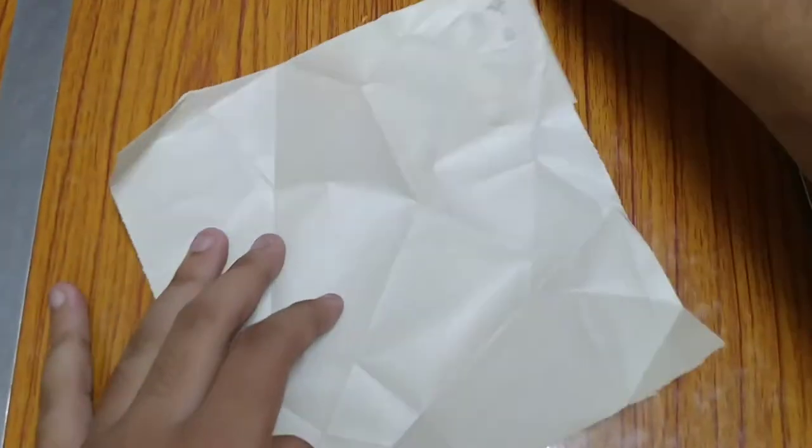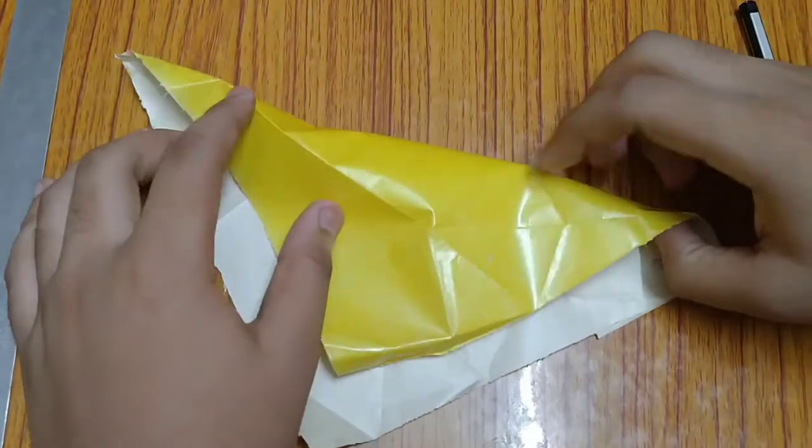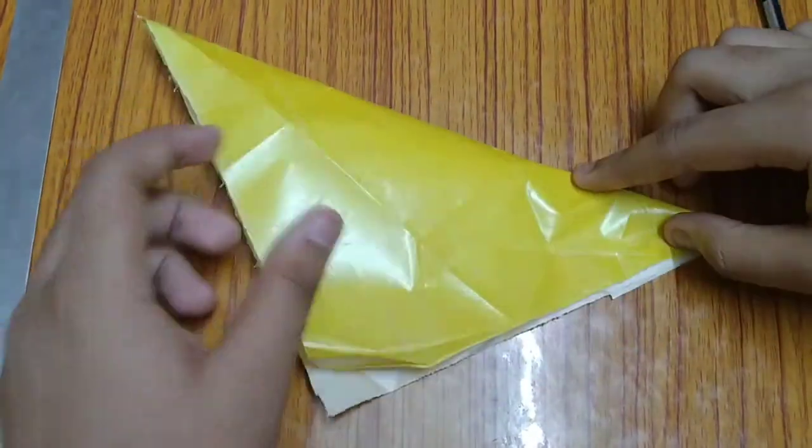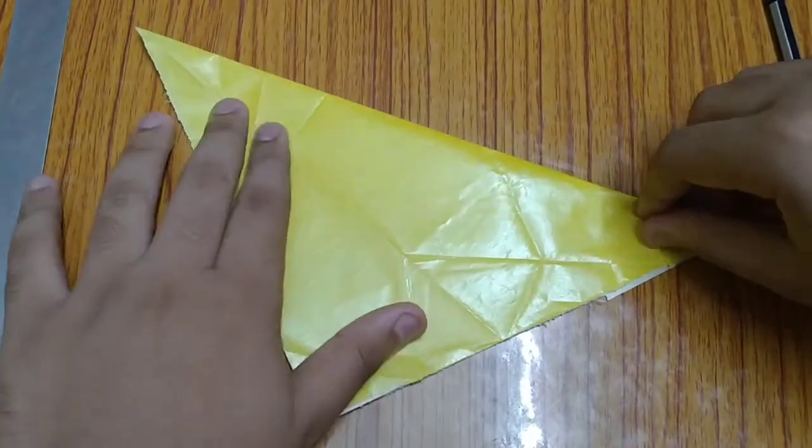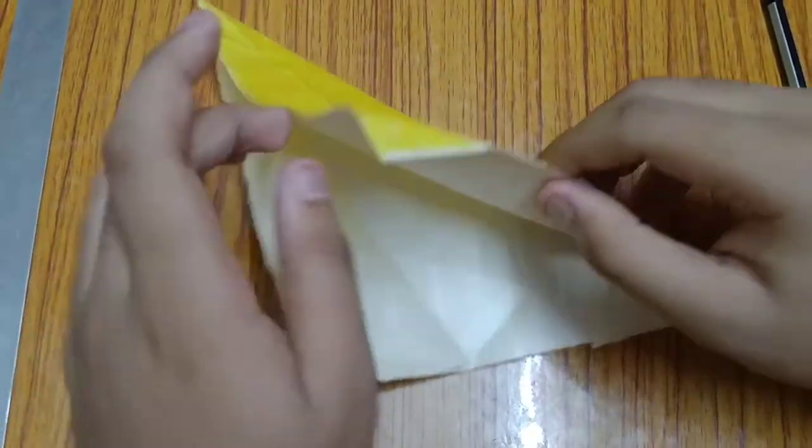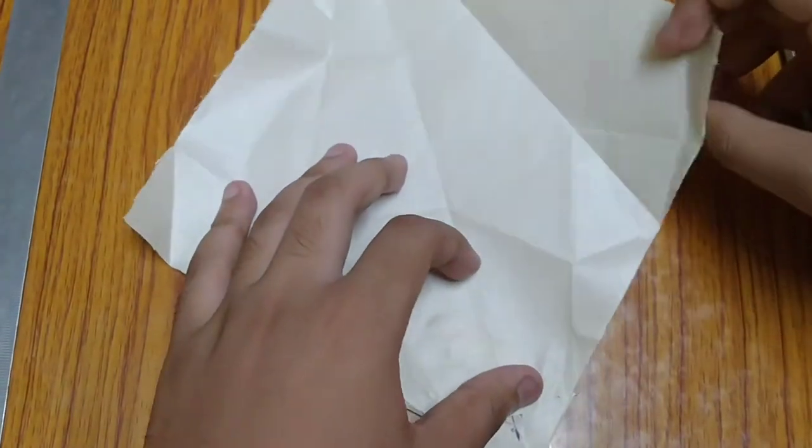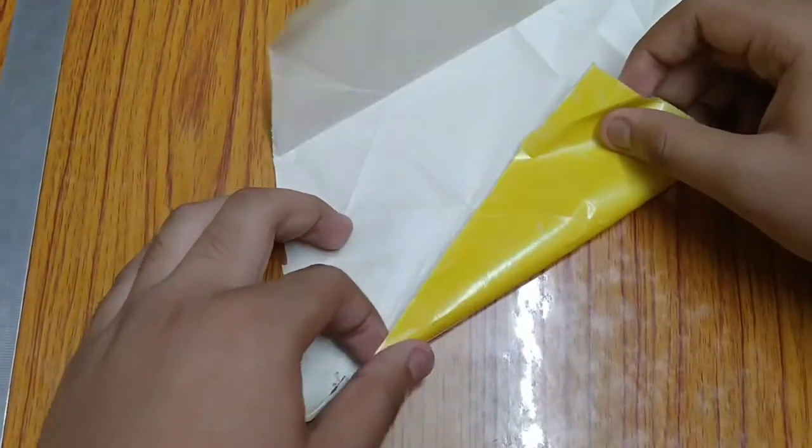Now fold this paper to make it a half. So it seems like a triangle. Now open this and fold this part.